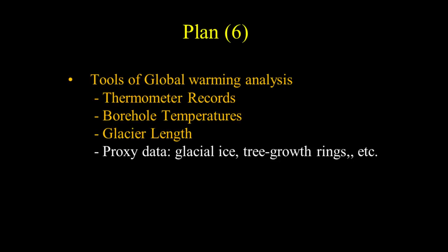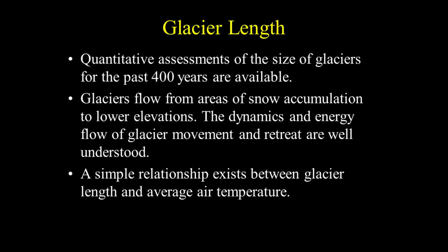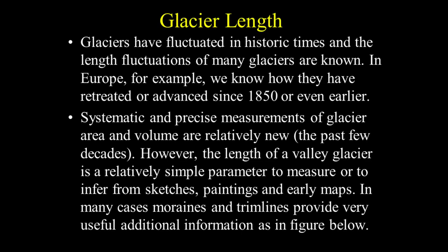Let's look at global temperature records obtained from glacier length. Quantitative assessments of glacier size for the past 400 years are available. Glaciers flow from areas of snow accumulation to lower elevations, and the dynamics of glacier movement and retreat are well understood. A simple relationship exists between glacier length and average air temperature. In Europe, for example, we know how glaciers have retreated or advanced since 1850 or even earlier.